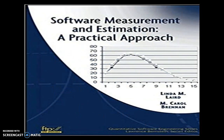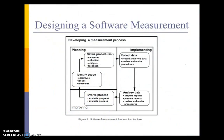Here you can see a practical approach to software measurement and estimation. Designing a software measurement involves four stages: planning, implementing, analyzing, and improving. Planning involves procedures like measure collection, analysis, and feedback. Implementing includes collecting data, recording and storing data, reviewing and revising procedures, analyzing data, preparing and presenting reports, and reviewing and revising procedures again. Then evolve the process, evaluate progress, and evaluate the process.